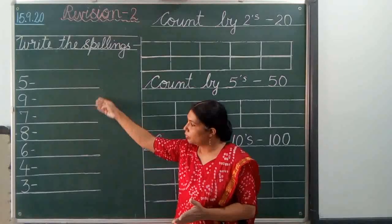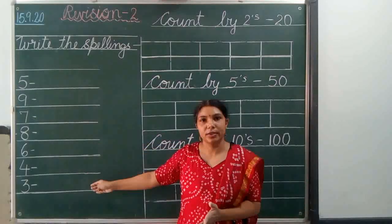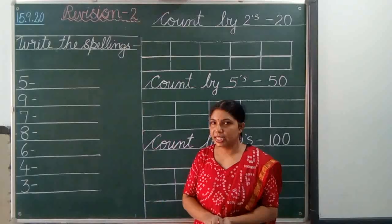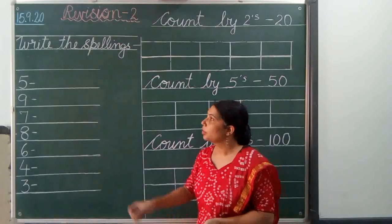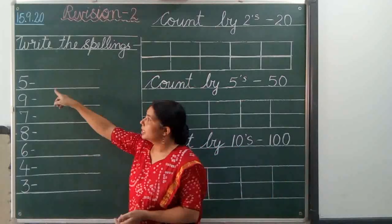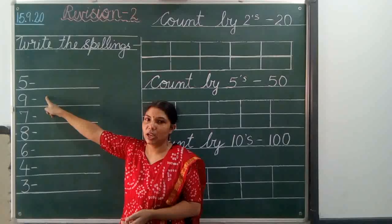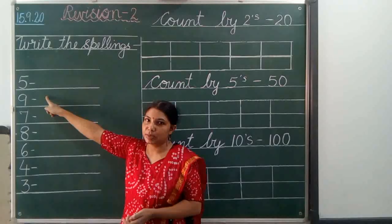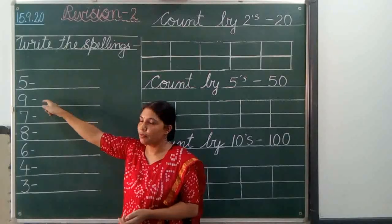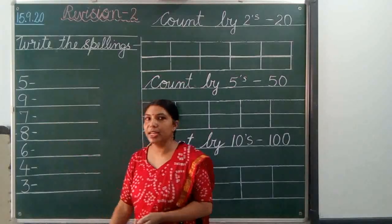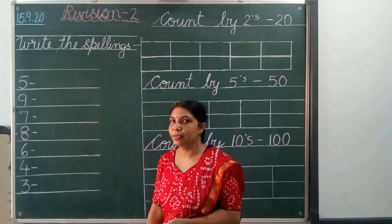In previous videos we have learnt how to write the spellings 1 to 10. Here we have to revise. Let's start. This is number 5 and you have to write down the spellings of 5. What does it mean the spellings of 5?